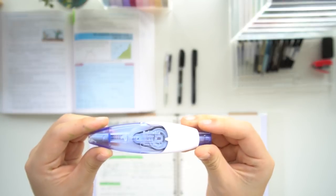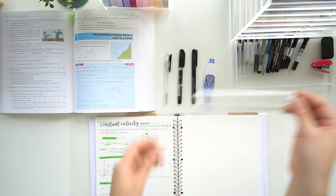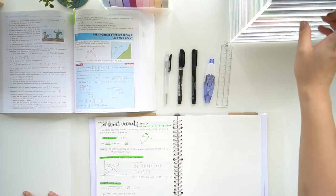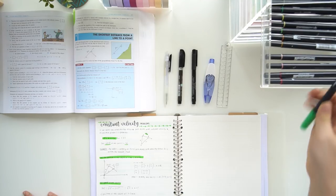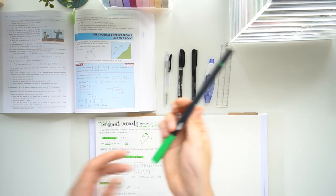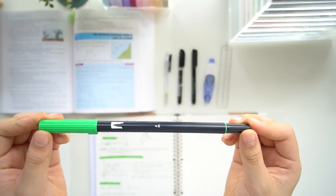I also like to always have some whiteout and also a ruler because this really helps with making your notes neat. Finally, my last note-taking essential is either to have a Tombow brush pen, Mildliner, or any highlighter of the sort, and this is just to add some color and highlight the key points.